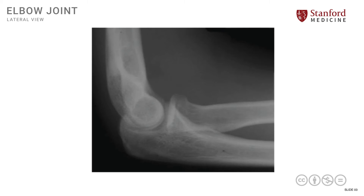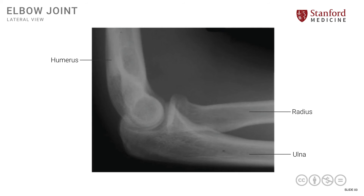Here we have an x-ray of the elbow joint seen from a lateral view. We can see the three bones again that participate in the formation of the elbow joint: the distal end of the humerus, the proximal end of the radius, and the proximal end of the ulna — the three bones forming this hinge joint.